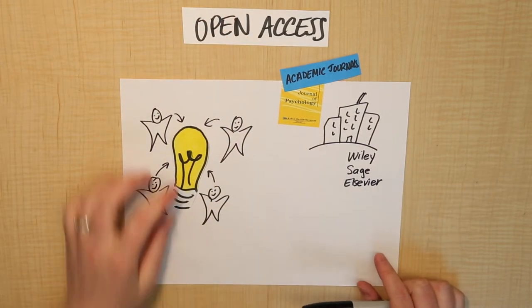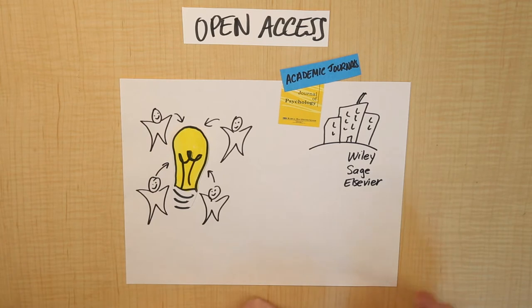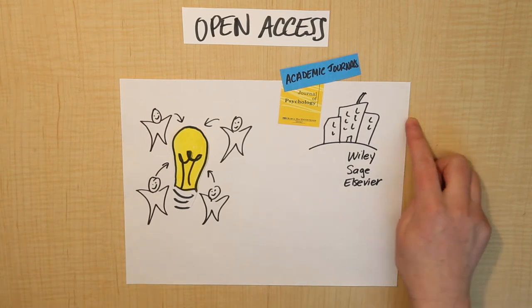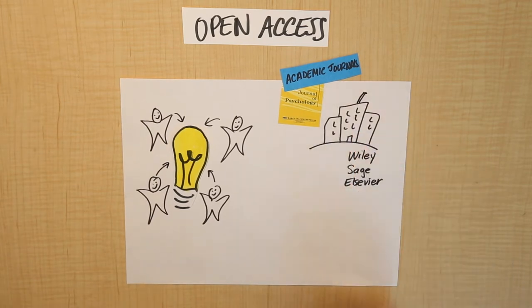Now, when you search in PsycInfo, for the most part, what you're finding is articles that were published in this traditional method. However, there's also another type of journal that's called open access.